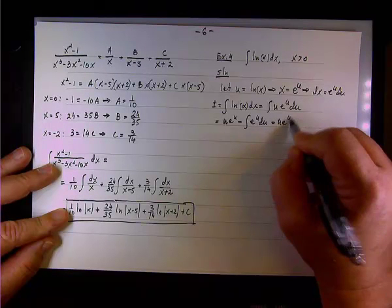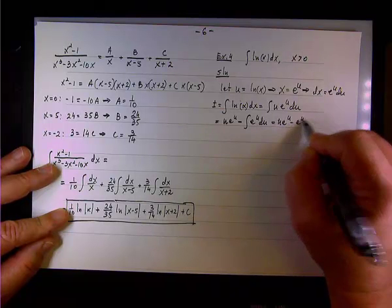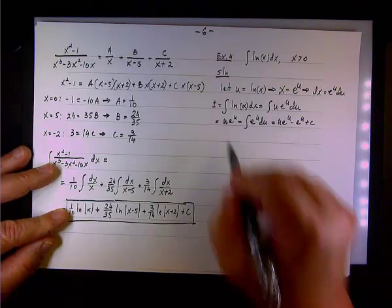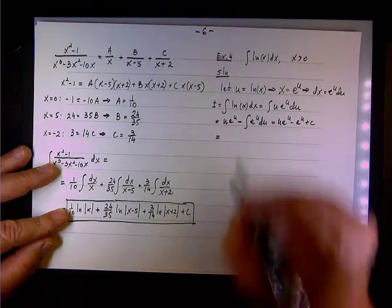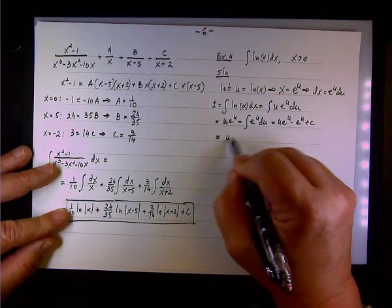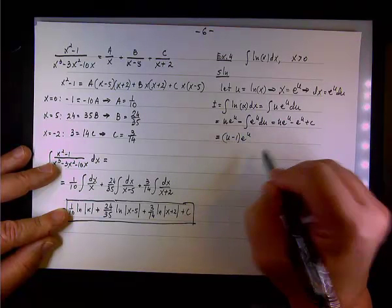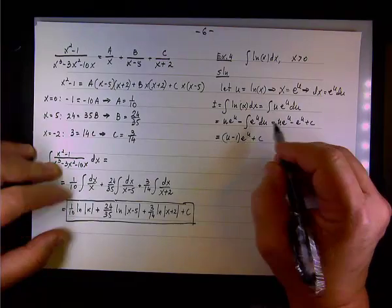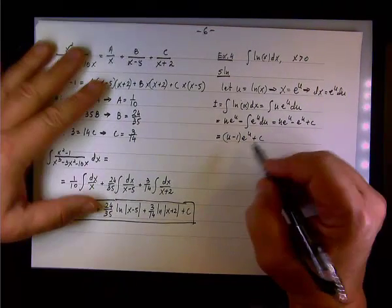So we're looking at u·e^u minus e^u, which factors as (u minus 1) times e to the u, plus c.